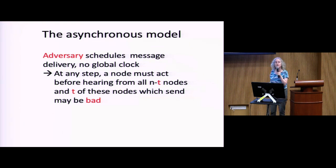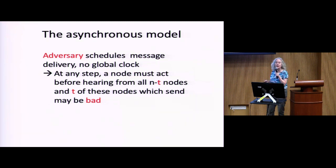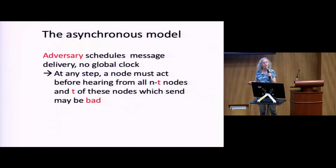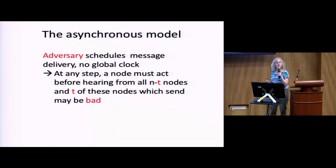In the asynchronous model, the adversary schedules the message delivery. There's no global clock. A node can only wait to hear from at most N minus T nodes, including itself. It doesn't know if it doesn't hear from T nodes whether those are bad nodes who aren't writing or just good nodes who are delayed. So it basically can only wait for N minus T messages to be received rather than all messages, because it might be waiting forever.